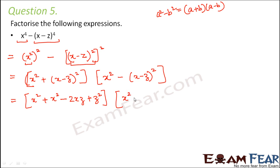Similarly, in this case also we will do the same. So this becomes x square minus 2xz plus z square.